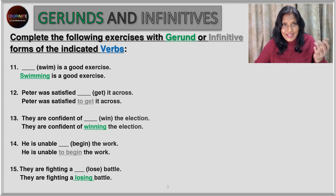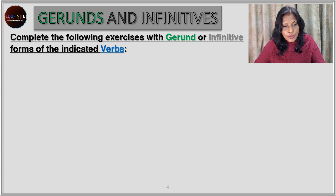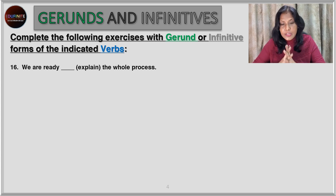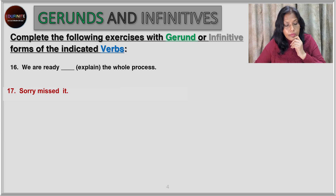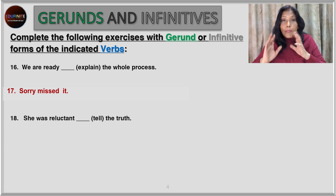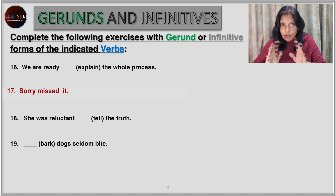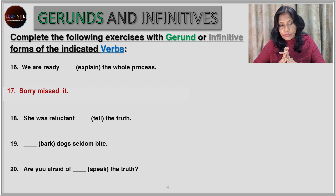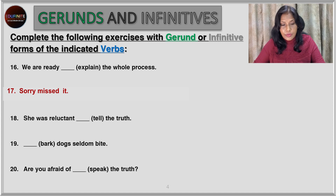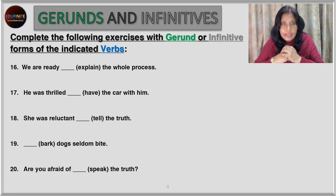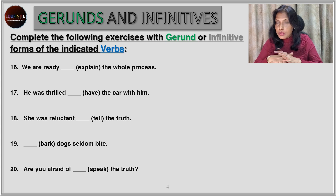Now the last set of five questions. We are ready, blank — the verb is 'explain' — the whole process. She was reluctant, blank — to tell the truth. Blank — verb is 'bark' — dogs seldom bite. Are you afraid, blank — the verb is 'speak the truth'? And: he was thrilled, blank — the verb is 'have the car with him'. Pause the video, write down the answers and check with mine.